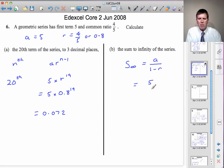So that's 5 divided by 1 minus 4 fifths, which is 5 divided by a fifth. And to divide by a fifth, we simply multiply by 5 over 1. So the answer is 25.